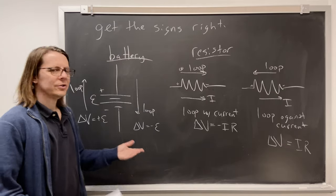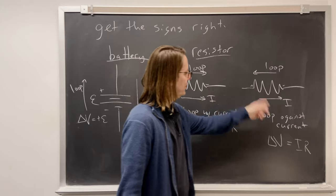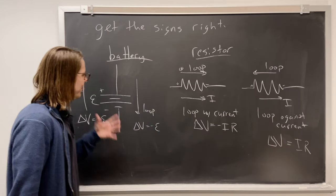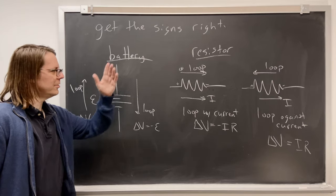So those are pretty intuitive. But if you like rules, loop with the current, negative IR. Loop against current, positive IR. With a battery, minus to plus is positive EMF, plus to minus, negative EMF. Here's your rules.